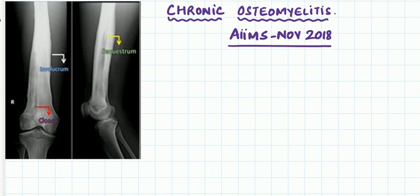Let's talk about chronic osteomyelitis. It was a recent AIMS November 2018 image-based MCQ. There was a request about how three structures look on X-rays. Now, when do you call an osteomyelitis chronic?